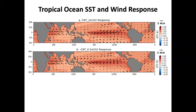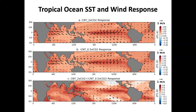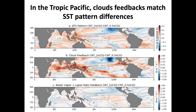The tropical Pacific SST and wind responses look strikingly similar between doubling and halving. Looking at the difference: the western tropical Pacific warms more than it cools, and there's more warming along the equator. Off the equator, especially in the eastern tropical Pacific, interesting signatures appear not necessarily related to wind forcing. Looking at cloud feedback differences and secondarily water vapor and lapse rate feedback differences, we do start to see a role for cloud feedbacks in explaining the patterns of the difference between warming and cooling.